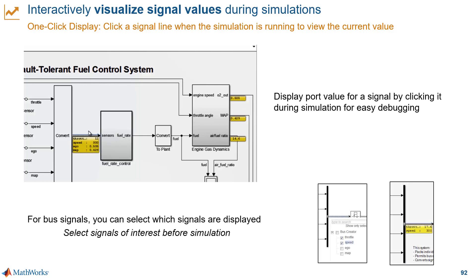You may be grouping dozens or hundreds of signals, so for buses you can select which signals are displayed — you just have to specify that before running the simulation. These port value displays can be very helpful to debug models because they can quickly show you unexpected signal values, errors in logic, or if data is not getting to where you expected.